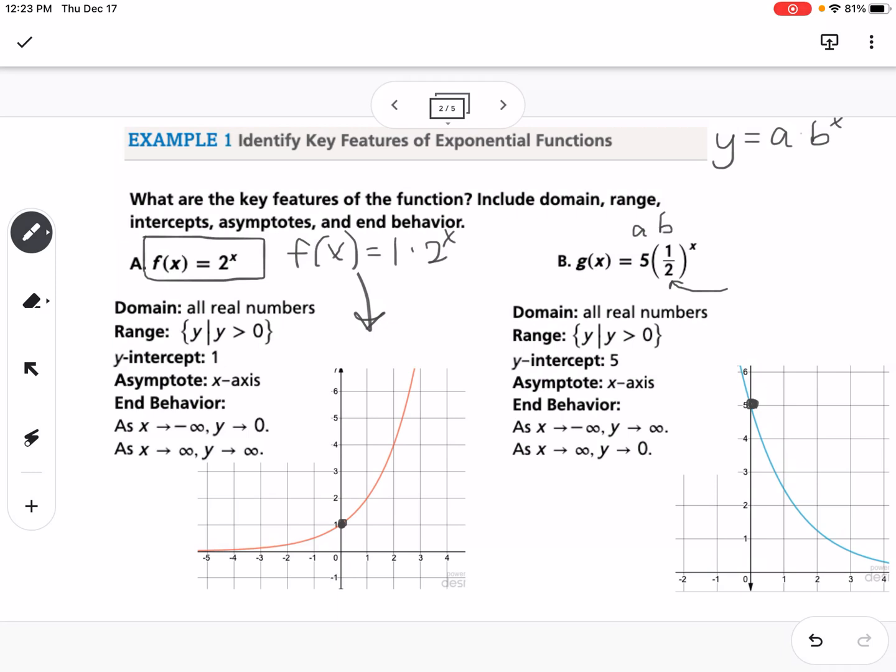So the domain still is all real numbers, the range is still all real numbers greater than 0. Our y-intercept at 5 is still an asymptote at the x-axis, but then you'll notice our end behavior flipped. So as we go to the left, it goes to infinity, and as we go to the right, it goes to 0.